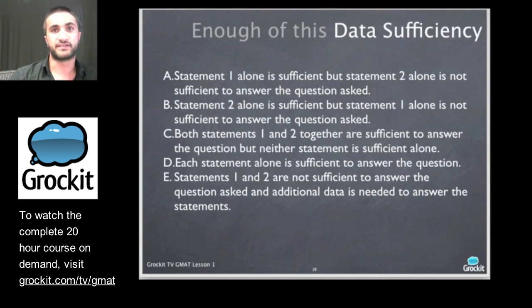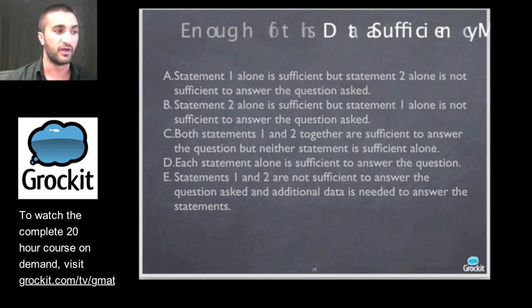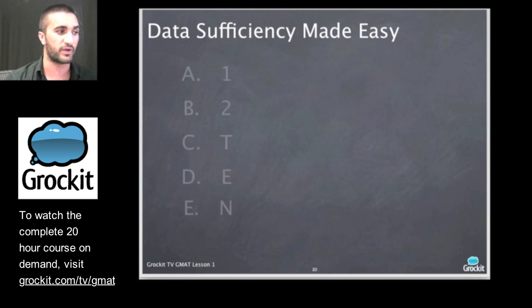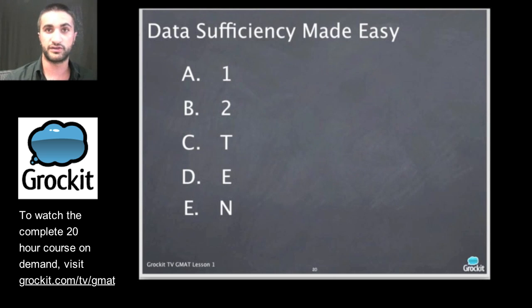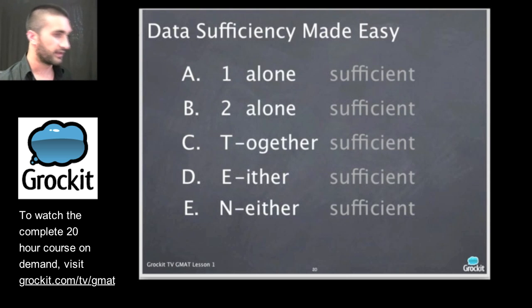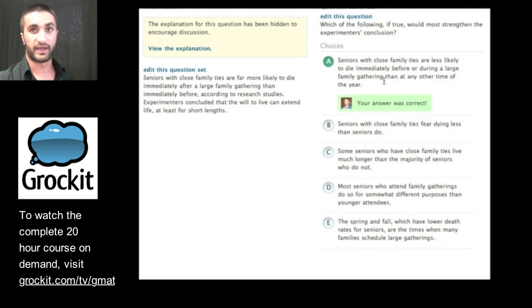So data sufficiency. This is how they present the answer choices in terms of how you pick one. They're always the same. They're pretty wordy here. I don't even want to read them. So I've simplified them and we're going to simplify them. We only ever look at data sufficiency questions as 1, 2, T, E, or N. Either one alone is sufficient, two alone is sufficient, together they are sufficient, either is sufficient, or neither is sufficient. So 1, 2, T, E, N is what we're going to write every time we see a data sufficiency question. And why don't we go ahead and see a data sufficiency question.